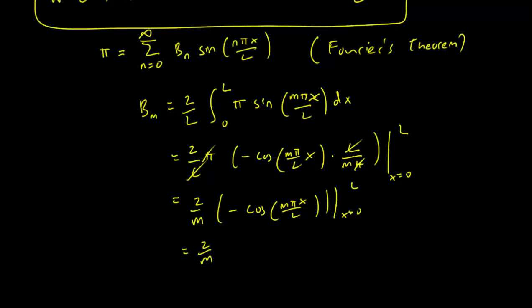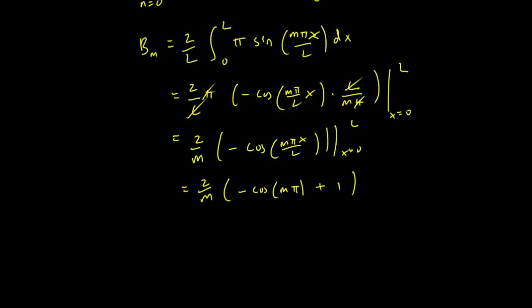This is of course just going to be 2 over L, minus cosine(m pi) because we're plugging in L here, so you just have m pi, and plus 1 because cosine of 0 is 1. That is our value for B_m.